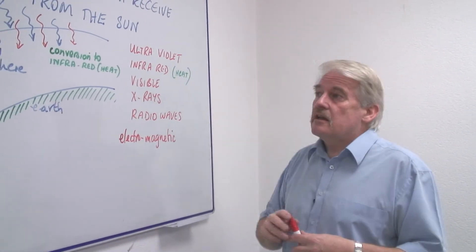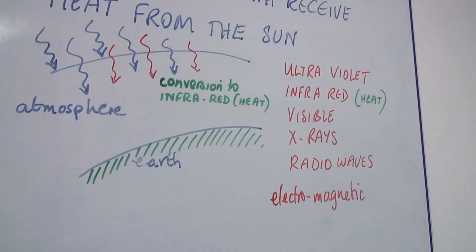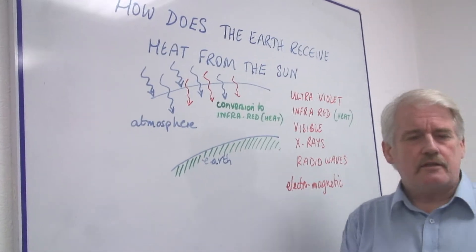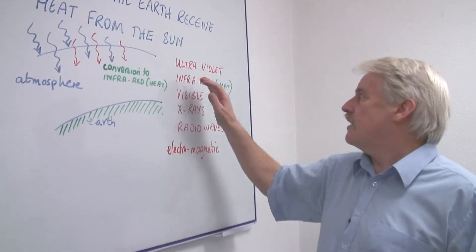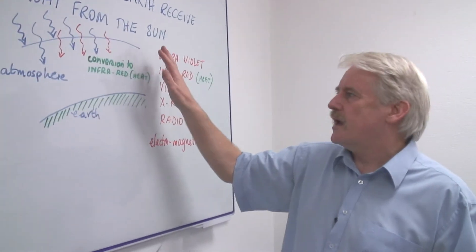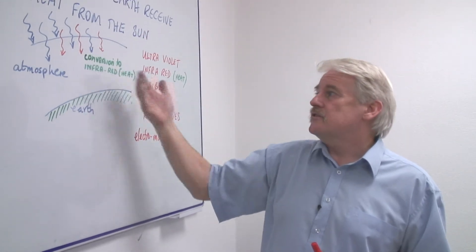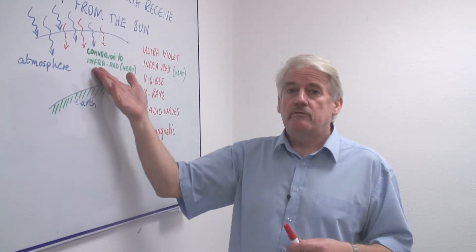Ultraviolet is another radiation which again is absorbed in the atmosphere. This is the radiation of course which gives us a nice sun tan or gives us sunburn if we're not careful. But again that radiation can be absorbed in the atmosphere giving out infrared at a lower level.